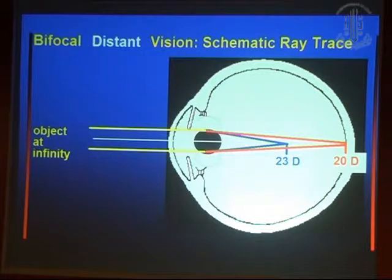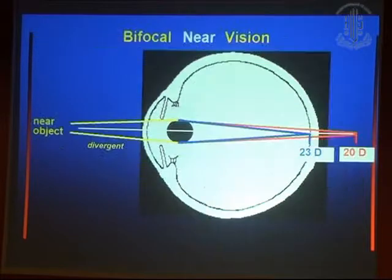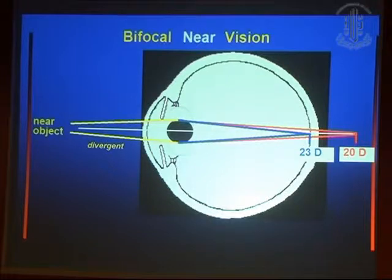Now when you have bifocal lenses, the diopters are calculated — this is for distance at 20 diopters, and 20 diopters for reading. When you see near vision, the divergent range goes there, and 20 diopters focuses onto the fovea while the other 20 diopters goes there.